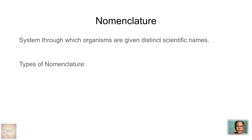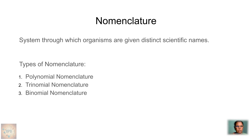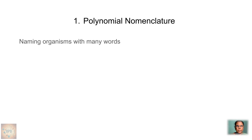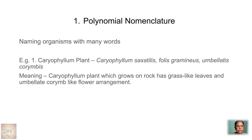There are three different types of nomenclature: polynomial nomenclature, trinomial nomenclature, and binomial nomenclature. In the polynomial system, the name of each plant or organism consists of many words — 'poly' means many. For example, the name of the Caryophyllum plant indicates it is growing on rocks, has grass-like leaves, and an umbellate corymb arrangement of flowers.